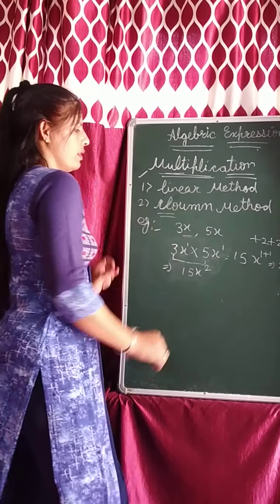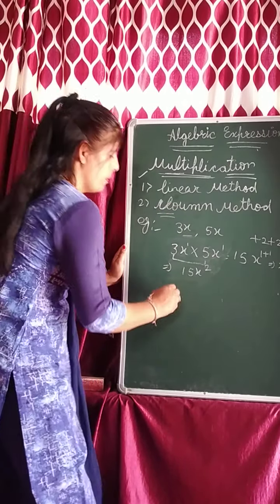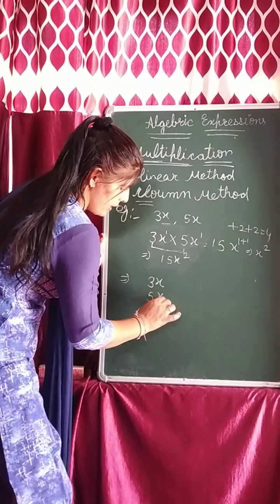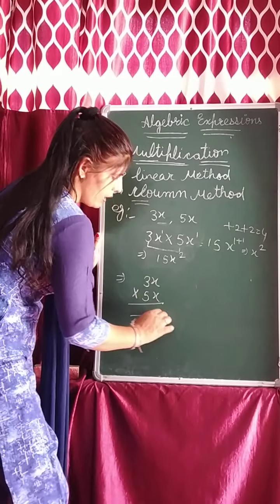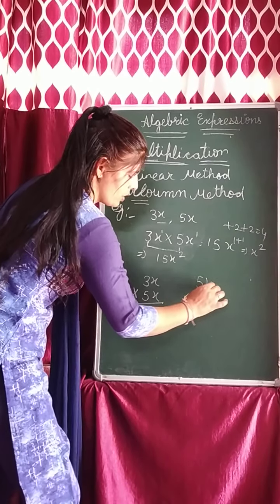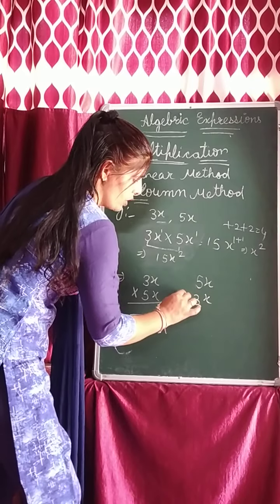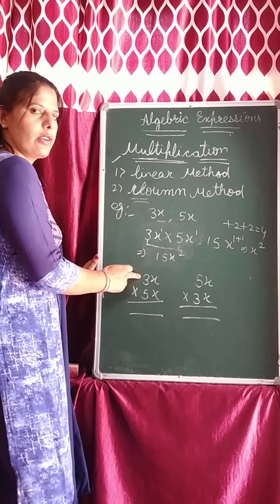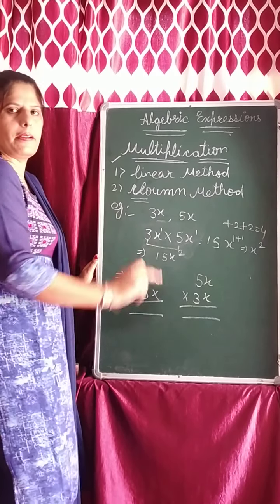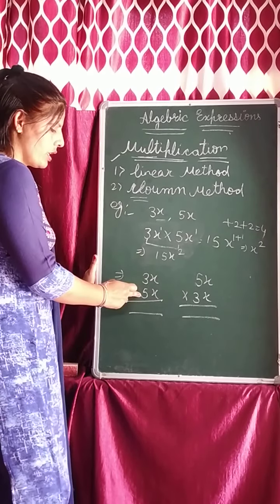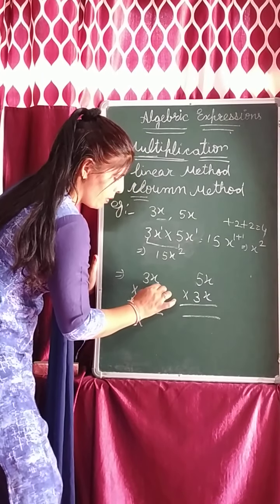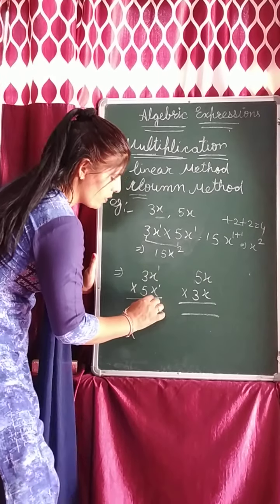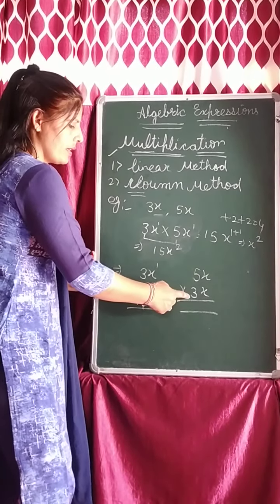Now using the column method, how will you solve this sum? As it is — write 3x on top and 5x below and multiply them. You can also solve it by keeping 5x on top and 3x on the downside and multiply. Same as before — constant with constant and variable with variable. Constant 3 times 5 is 15. x has power 1 here, x has power 1 here — when you multiply both, what will the power become? 2. Same as it is.